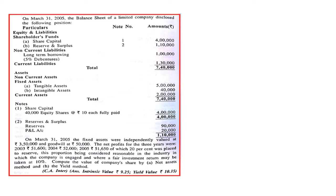Of the net profits, 20% was placed under reserve — that is, 20% we will be transferring to reserve. This proportion is considered reasonable in the industry. A fair investment return — that is NRR — may be taken at 10%. Compute the value of share by net assets method as well as yield value method.